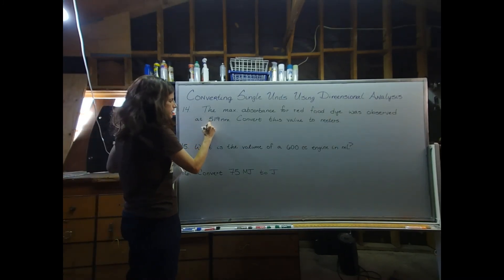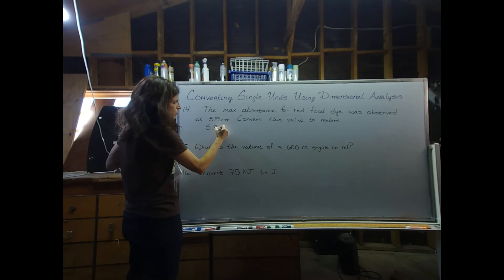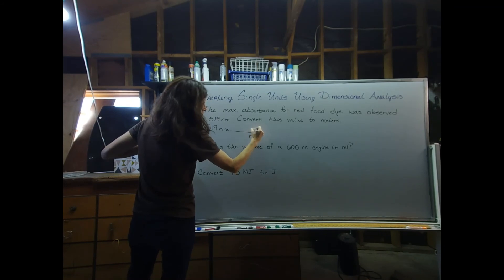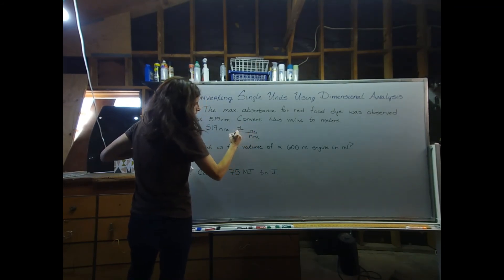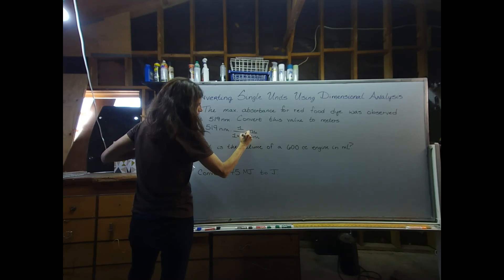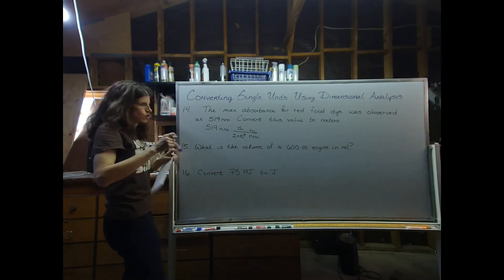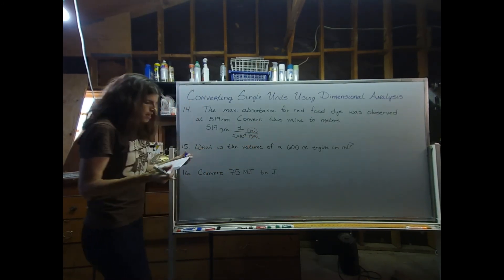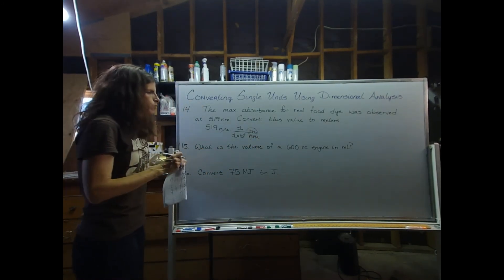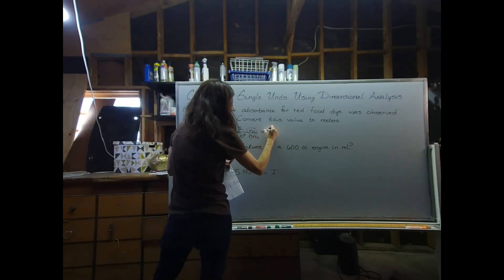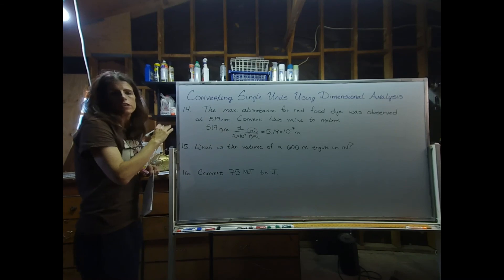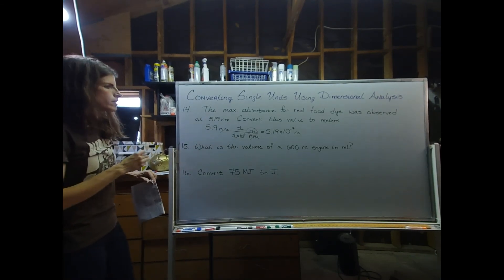Starting with 519 nanometers, getting rid of nanometers and converting to meters: 1 meter equals 1 times 10 to the 9th nanometers. Dividing 519 by 1×10⁹ gives 5.19 times 10 to the negative 7 meters. Sig figs agree — three and three.